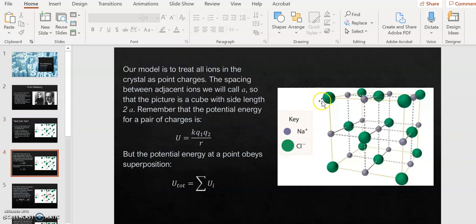We're going to treat all the ions in this crystal as point charges, which means they would be infinitely small and just situated at the locations shown in the diagram. We're going to call the distance between nearest neighbor ions A, which would mean that for this picture we have a cube with side length 2A.